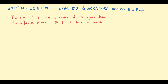In this video we're going to be looking at solving equations with brackets and unknowns on both sides. Here is a problem you can have a go at: the sum of 3 times the number and 10 equals double the difference between 100 and 8 times the number. This is an example of a problem that is difficult without algebra, but with algebra, knowing how to solve equations, it's super simple. We'll come back to this example at the end.